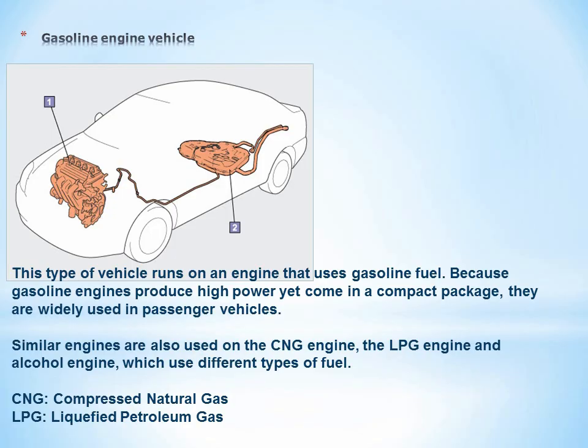Gasoline engine vehicle: This type of vehicle runs on an engine that uses gasoline fuel. Because gasoline engines produce high power yet come in a compact package, they are widely used in passenger vehicles. Similar engines are also used on the CNG engine, the LPG engine, and alcohol engine, which use different types of fuel.